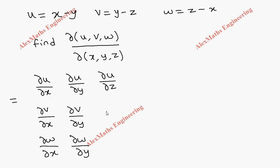And the third column: ∂u/∂z, then ∂v/∂z, then ∂w/∂z. So this determinant we are going to evaluate and we have to fill all the elements here.